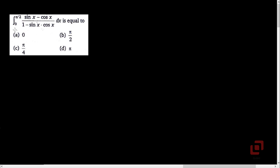Let's go to the next question: the integral of (sin x minus cos x) upon (1 minus sin x into cos x) dx as x goes from 0 to pi by 2. To solve this question, we first note that the lower limit of the integral is 0. So we check whether we can use the property: integral from 0 to A of f(x) dx equals integral from 0 to A of f(A minus x) dx. Let us call the given integral as I, equal to integral from 0 to pi by 2.